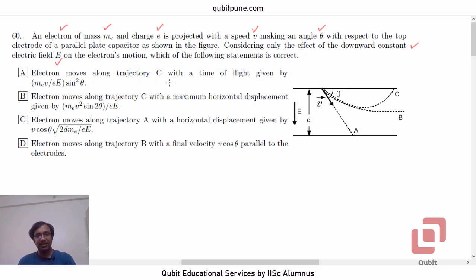Electron moves along trajectory C with a time of flight given by whatever that expression is. Electron moves along trajectory C with a maximum horizontal displacement given by that expression. Electron moves along trajectory A with a horizontal displacement given by that expression. Option D: Electron moves along trajectory B with a final velocity V cos theta parallel to the electrodes.